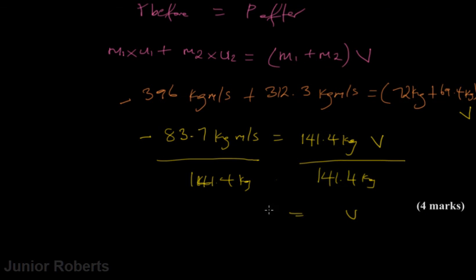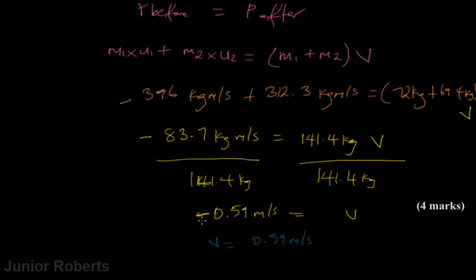Therefore our velocity V is 0.59 meters per second. Since we took negative as west, the trolleys will be moving with a velocity of 0.59 meters per second to the west.